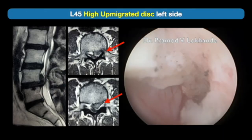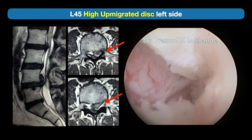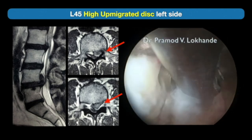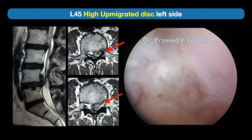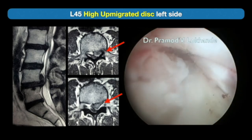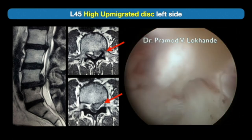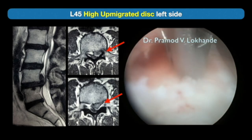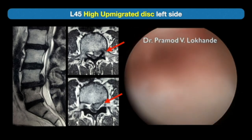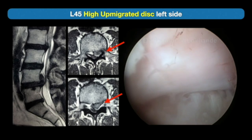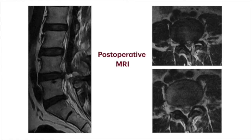Another case example: a high up-migrated disc on the left side. Using a left-sided approach, the lateral border of the nerve root is identified. The nerve root is retracted with the tip of the working sleeve and part of the herniation is removed. The posterior longitudinal ligament is released to visualize the up-migrated fragment lying under the nerve root. The 25-degree angled endoscope allows you to look under the ligamentum flavum and under the nerve root, enabling complete removal of the herniated fragment. Post-operative MRI confirms complete removal of the high-migrated disc herniation.